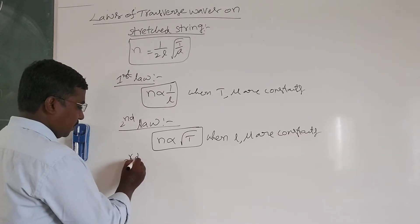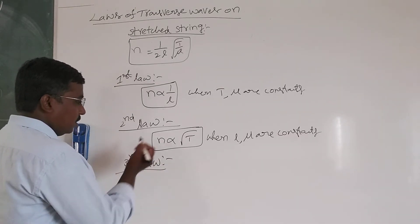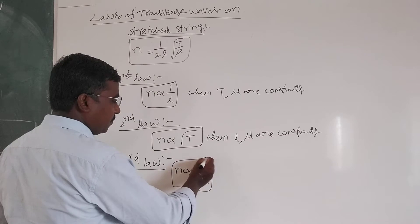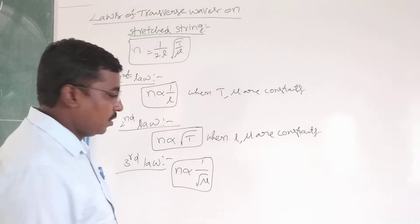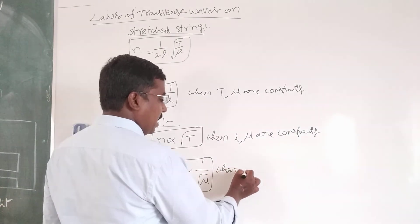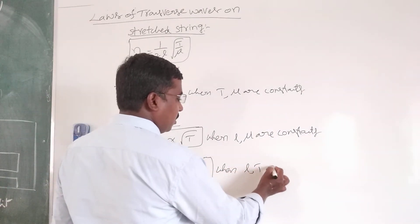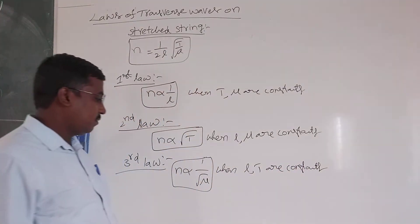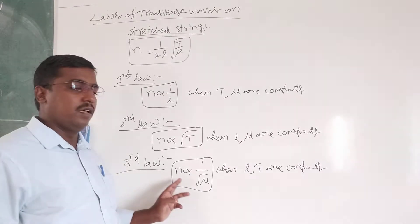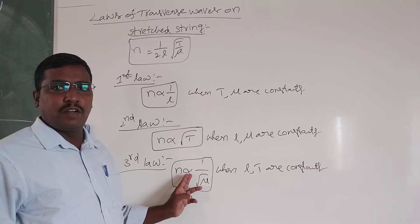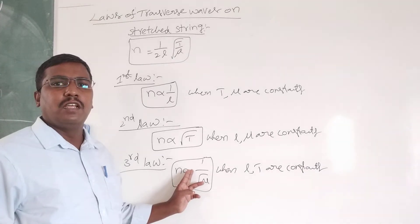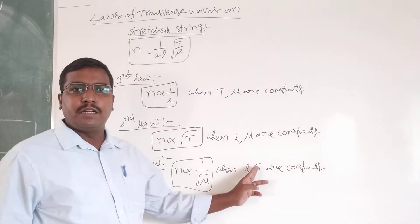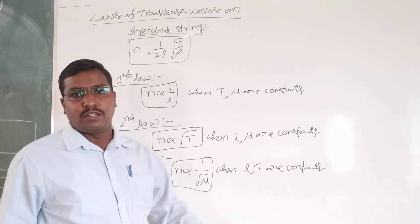The third law: N is inversely proportional to 1 by root mu, when the length and the tension of the string are constant. The frequency of the string is inversely proportional to the square root of the linear mass density, when the length and the tension in the string remain constant.